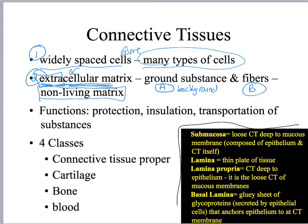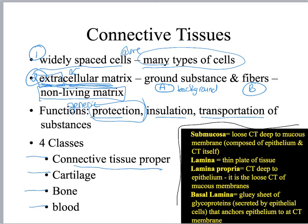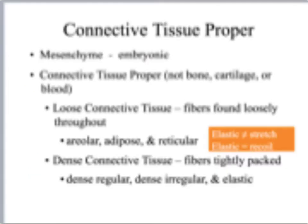In terms of function — protection, insulation, transportation of substances — these are all very generic. When talking about specific connective tissue types, I expect you to give specific functions. We've got four classes: connective tissue proper, cartilage, bone, and blood. In Unit 2, I'm going to focus mainly on connective tissue proper, cover cartilage very briefly, touch on bone, and may mention blood.